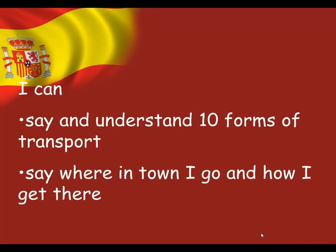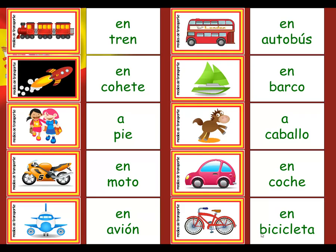So, here's what we're going to be doing in the main part of our lesson today. We're going to be learning how to say and understand 10 forms of transport — that's our new learning for today — and we're going to use those to help us to say where in town I go and how I get there. So we're going to be using our places for where you go and the transports for how you get there. Here are our transports. There are 10 of them — you've got the pictures and the words. Let's have a go at saying these new transports.